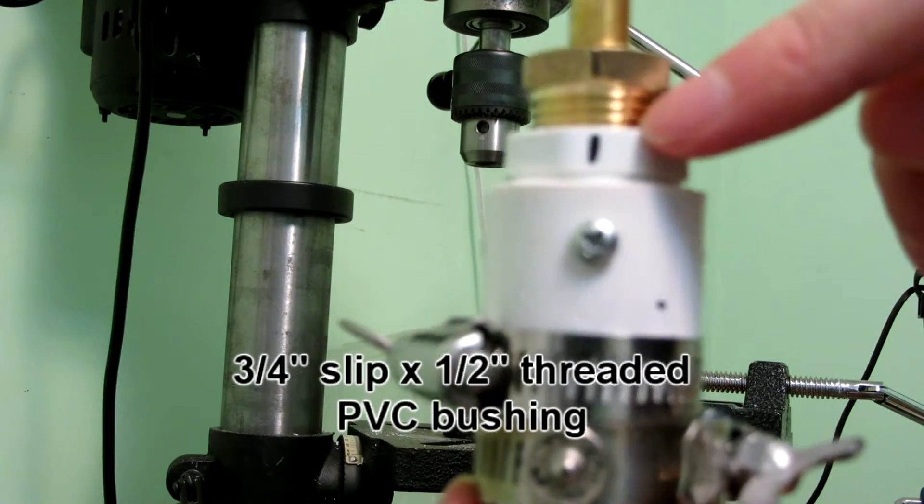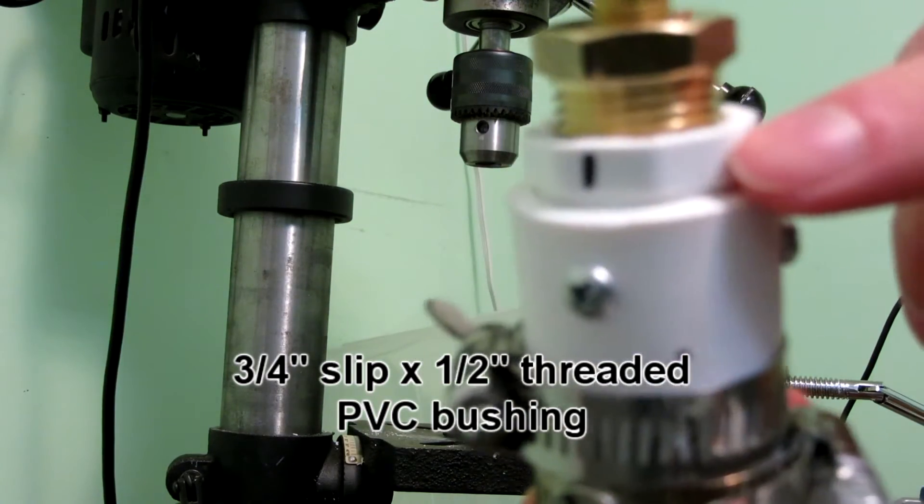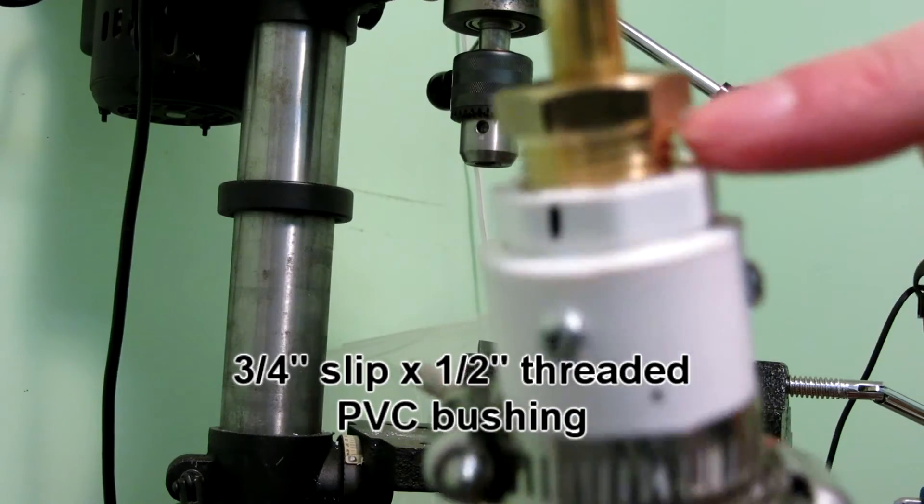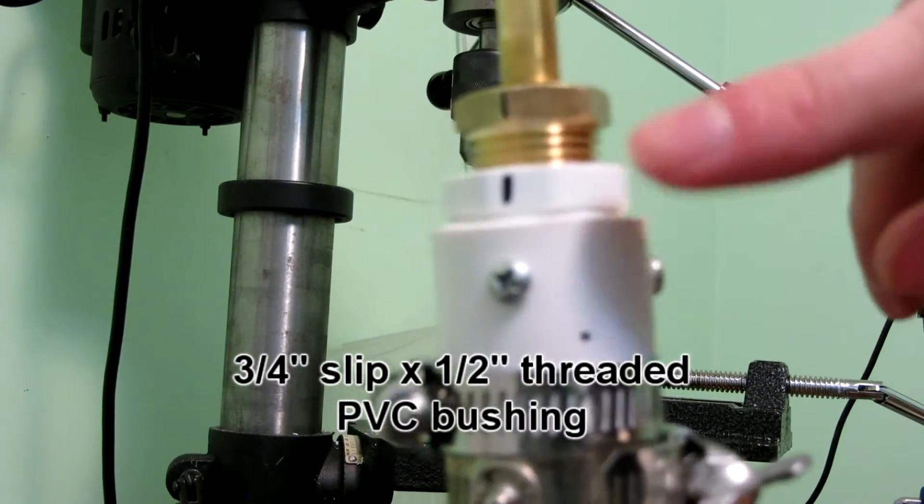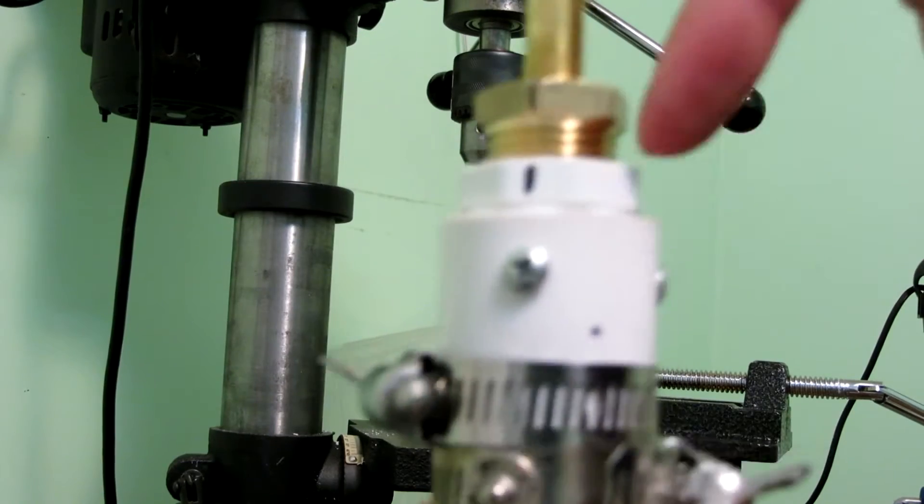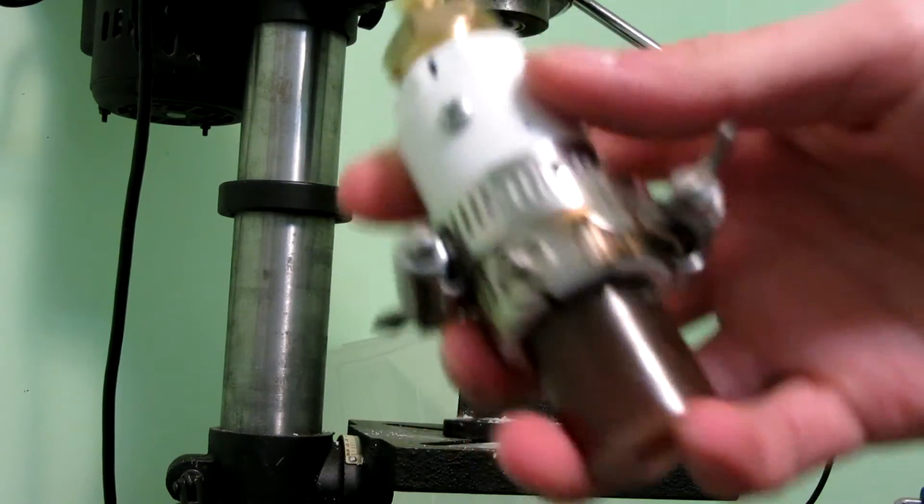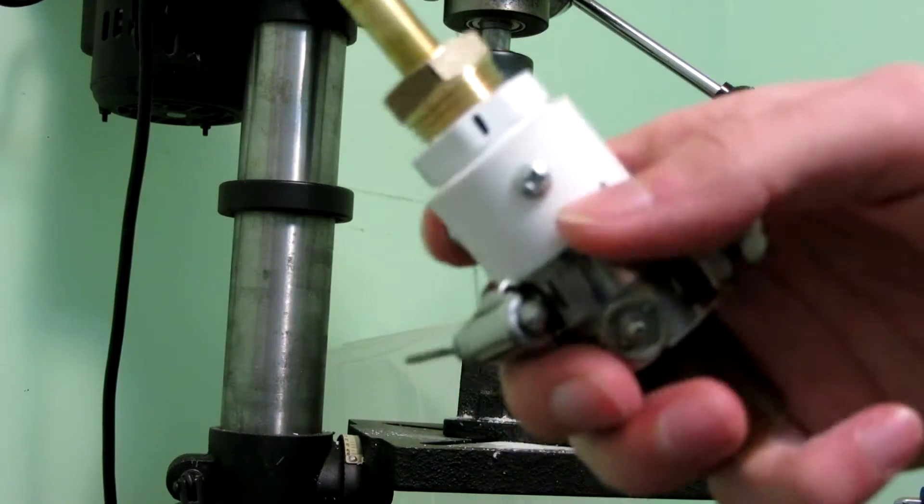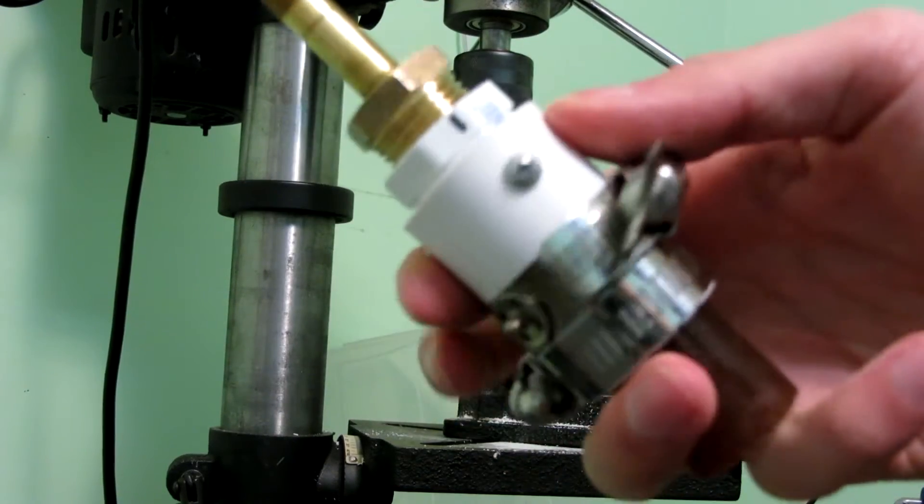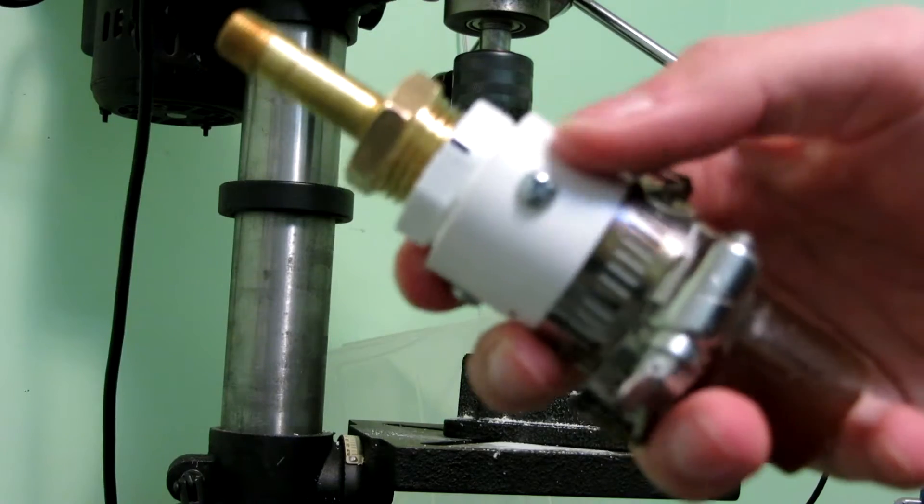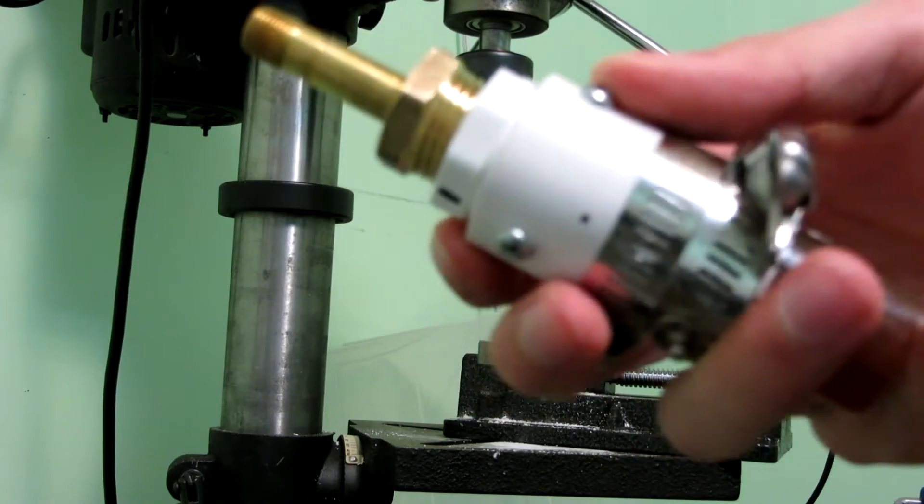A 3 quarter inch to half inch threaded slip to threaded bushing is jammed inside of the 1 inch pipe. That's just because the tolerances work out that way. Instead of gluing it, I put three screws, these are just little machine screws, into the side.